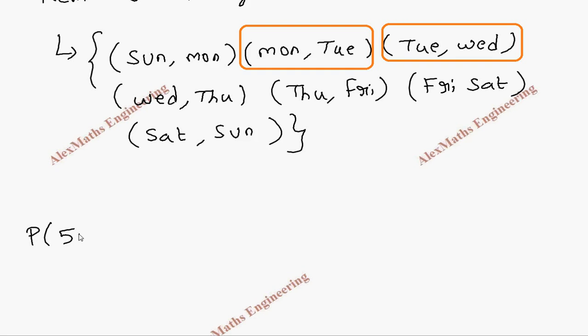So probability of 53 Tuesdays equals—there are two options out of a total of seven options. So the probability of getting 53 Tuesdays is 2 by 7.